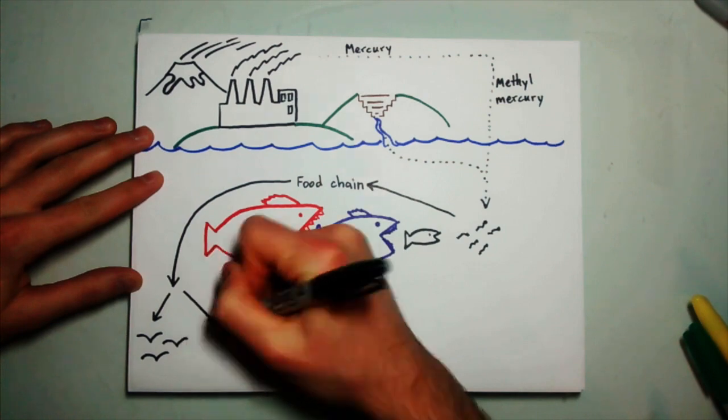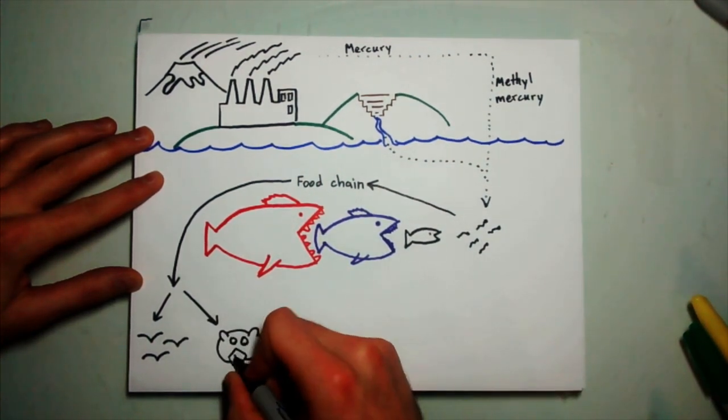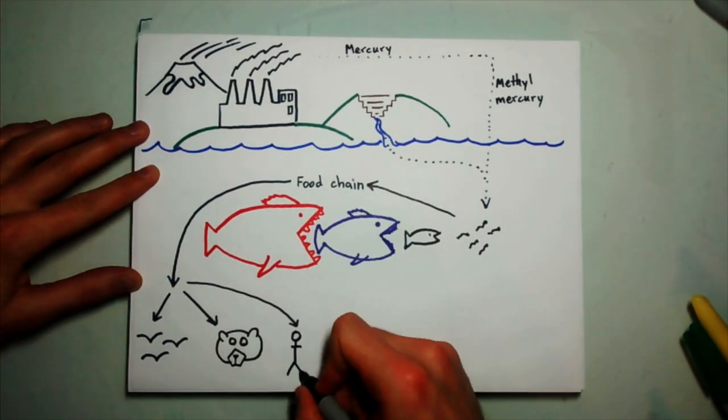The grasshopper effect occurs when mercury is emitted into the atmosphere from industries in southern latitudes and is precipitated out with rain or snow in northern areas.